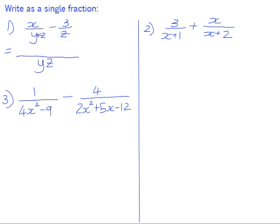You need to times y by z to give you yz, so you multiply x by z. That gives you xz. And you need to multiply z by y, so you multiply the negative 3 by y, which gives you negative 3y. There are no like terms in the numerator, so that is as simplified as you can do that one.